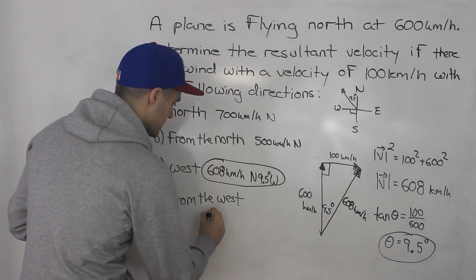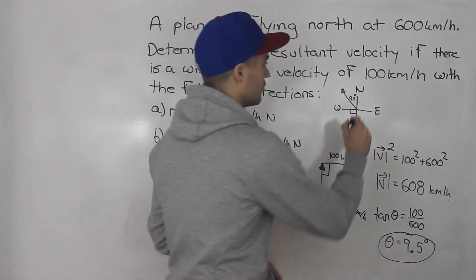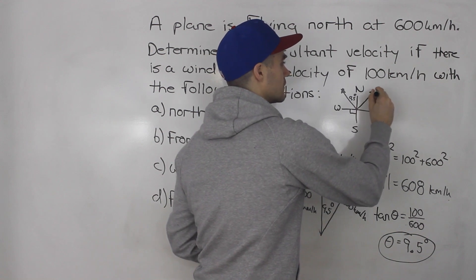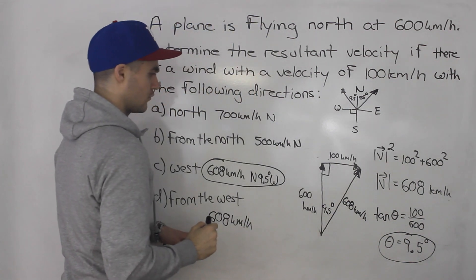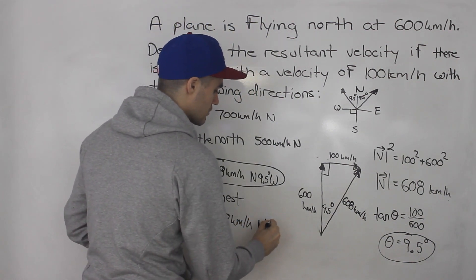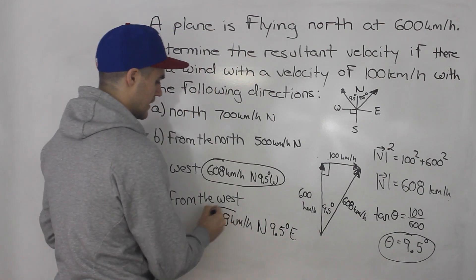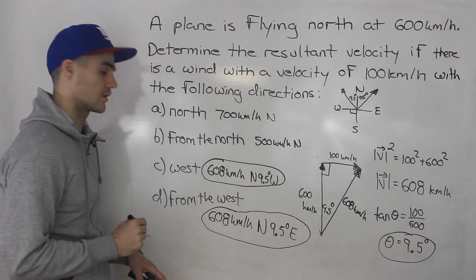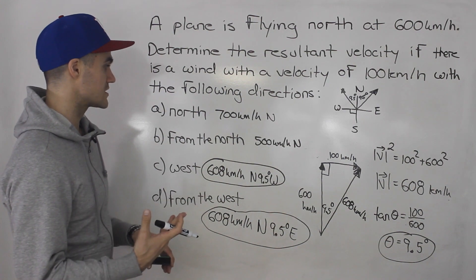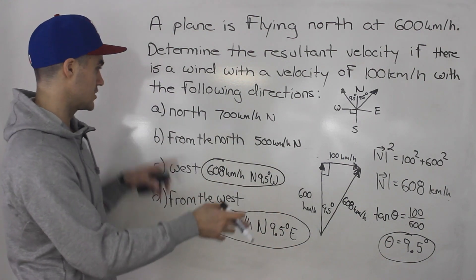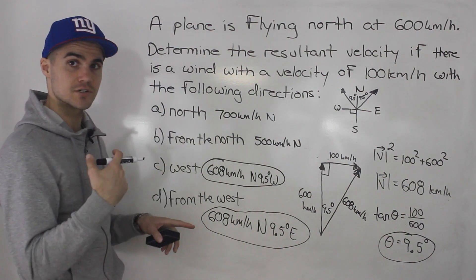The speed for part D is the same as part C — 608 kilometers per hour — but the direction is different because the wind is now to the right of north, so it's north 9.5 degrees east. That is the answer to part D. Just be careful in these questions whether the wind velocity is going toward a certain direction, like in parts A and C, or coming from a certain direction — if it's coming from a direction, it's going in the exact opposite direction.